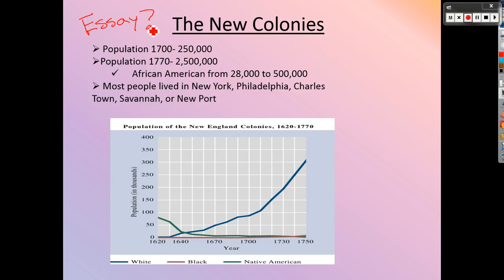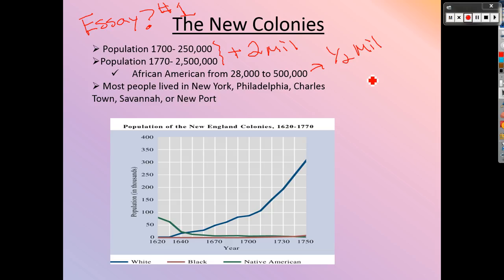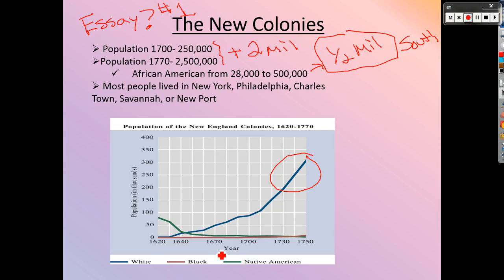That very first essay question — there are three on this test and you'll choose two — is about population. From the time period we started learning, the population has gone up by two million people, which is a lot for that time period. African-Americans, or basically just Africans at this point since America wasn't really America yet, have gone up almost a half million. This chart shows how the huge population spike of Europeans is countered by the drop in Native American population to almost nothing.